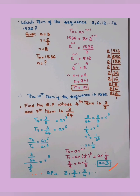Therefore the GP is written by starting with a = 3 and multiplying each term by r = 1/2: 3, 3×(1/2) = 3/2, (3/2)×(1/2) = 3/4, and so on. The GP is 3, 3/2, 3/4, ...